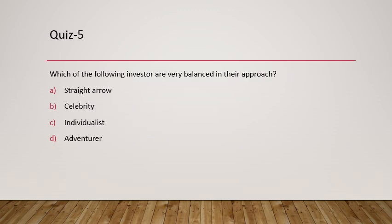Question five asks: which of the following investors are very balanced in their approach? Among the different kinds of investors, the ones who are very balanced and not psychologically very difficult to handle are straight arrow investors. They are very balanced in their approach.